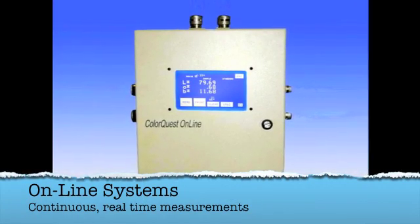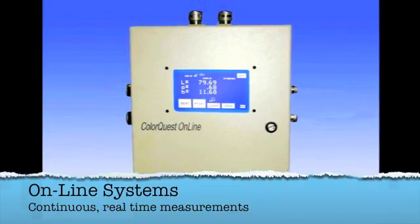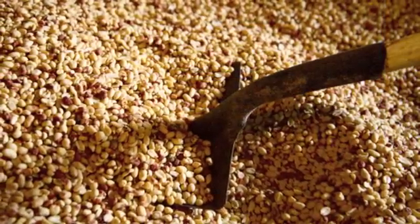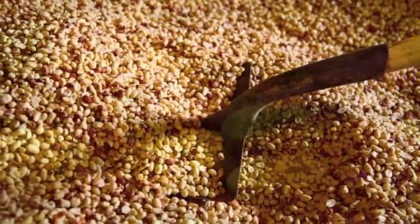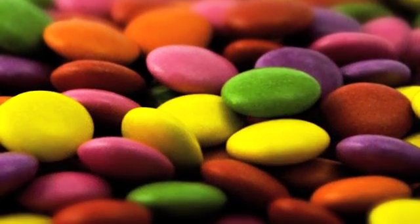Lastly are our online systems, which are able to provide continuous real-time measurements of your products. They are often found on the processing lines for 24-7 inspection, which allows you to respond to product color changes when they happen.